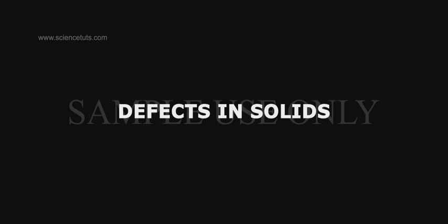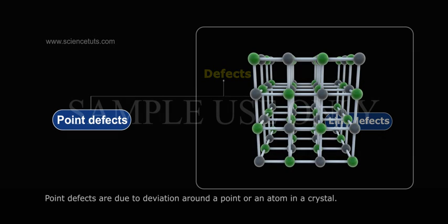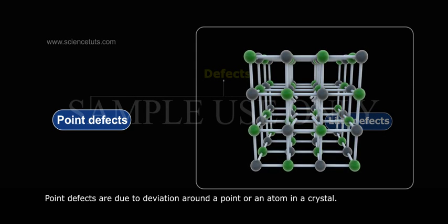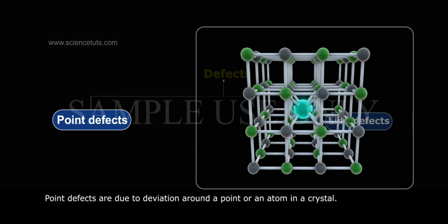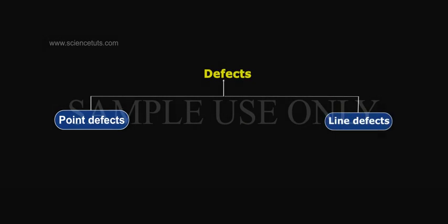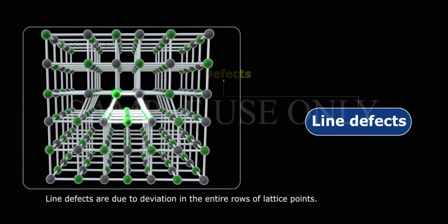Defects in solids are mainly two types: point defects and line defects. Point defects are due to deviation around a point or an atom in a crystal. Line defects are due to deviation in the entire rows of lattice points.